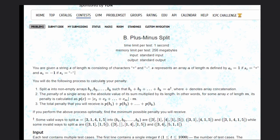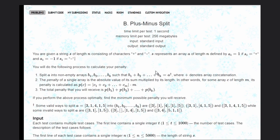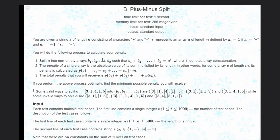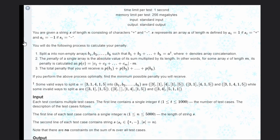In this problem we are given a string s that consists of plus and minus characters. S represents an array of length n defined by a_i equal to 1 if s_i equal to plus, and a_i equal to minus 1 if s_i equal to minus. We will need to calculate the penalty.